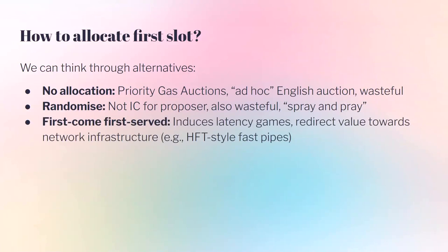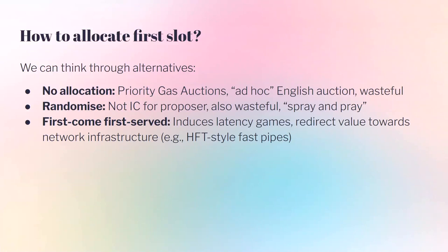Another possibility is first-come-first-served: the block proposer keeps a record of when they receive transactions and packs the block in chronological order of reception. This seems fair — whoever discovers the opportunity first gets the money. However, it induces latency games where arbitragers try to be as fast as possible. With a million-dollar arbitrage available, they'll spend a million dollars building fiber optic cables under New Jersey — the example from high-frequency trading. Most of the value on-chain just flows out of the system, invested in infrastructure.